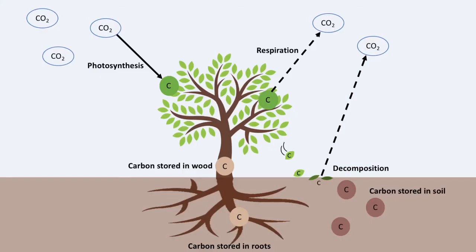Finally, vegetation sequesters carbon through photosynthesis — trees absorb carbon from the atmosphere and store it in their leaves, stems, trunk, and roots, converting it from a gas into an organic compound. Because trees are living things, they also respire, releasing some carbon dioxide back into the atmosphere. Like marine organisms, they die — leaves decompose when bacteria and fungi work on them, releasing CO2 back into the atmosphere, while some carbon molecules make their way into the soil and are stored there.